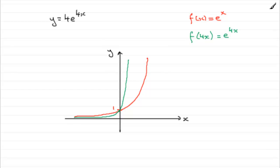Now, we multiply by a 4. So, we're looking at the graph now of 4 times the f of 4x, which gives us 4e to the 4x.